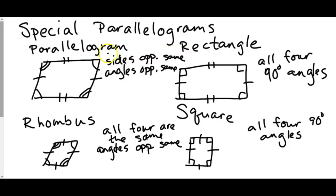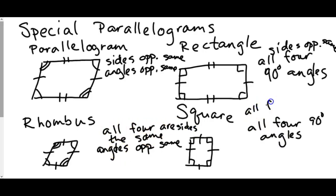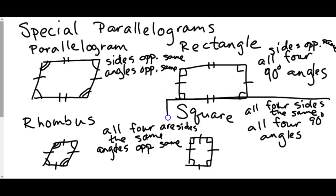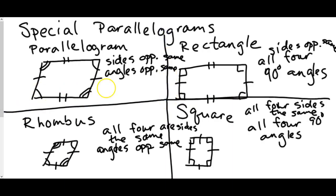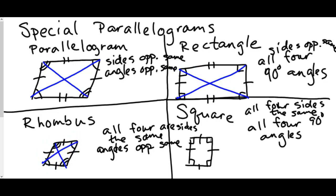Sides opposite being equal works for both parallelogram and rectangle, and all four sides the same works for rhombus and square. We can also talk about the diagonals in each of these shapes. All four of them follow the property that the diagonals bisect each other.